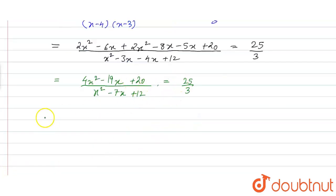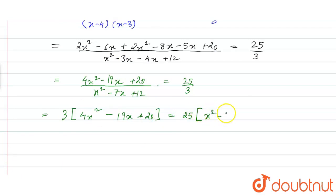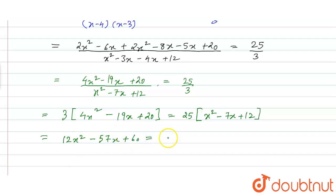Cross multiplying the terms, we get 3 into (4x squared minus 19x plus 20) equals 25 into (x squared minus 7x plus 12). Opening the brackets: 12x squared minus 57x plus 60 equals 25x squared minus 175x plus 300.